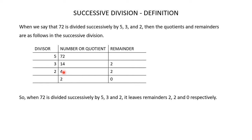This quotient now becomes the dividend for the next division. 4 is divided by 2, and we get 2 as the quotient and 0 as the remainder. So when 72 is divided successively by 5, 3 and 2, it leaves remainders 2, 2 and 0 respectively.